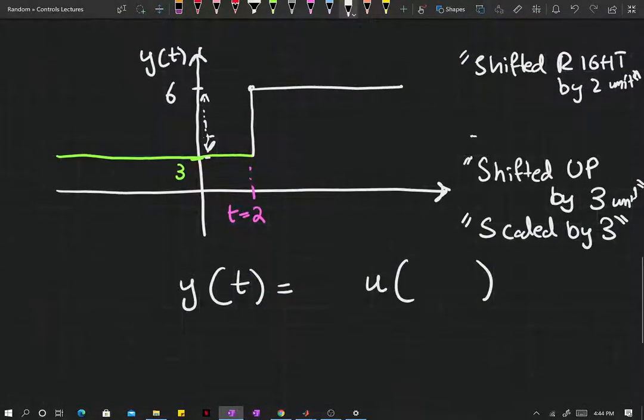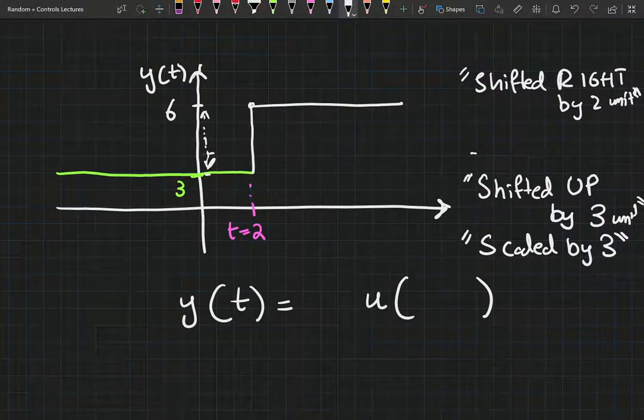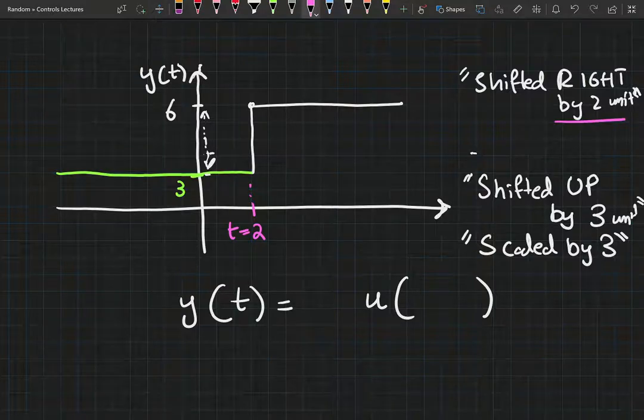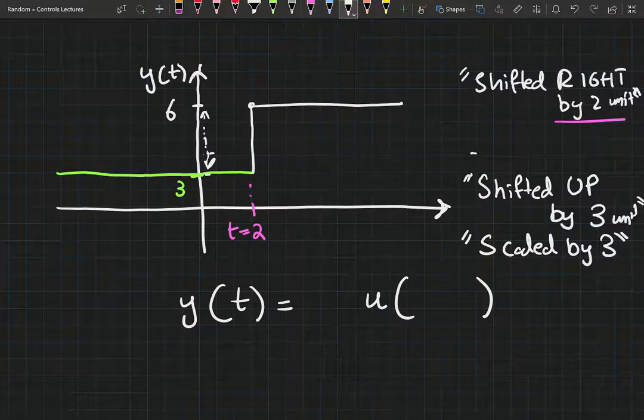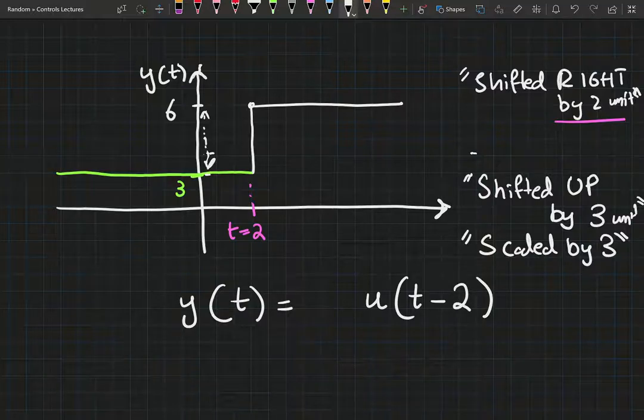And we can implement each and every transformation step by step. So the first transformation, shift to the right. Every time you want to shift your function to the right, you subtract the number of units you want to shift it to the right.